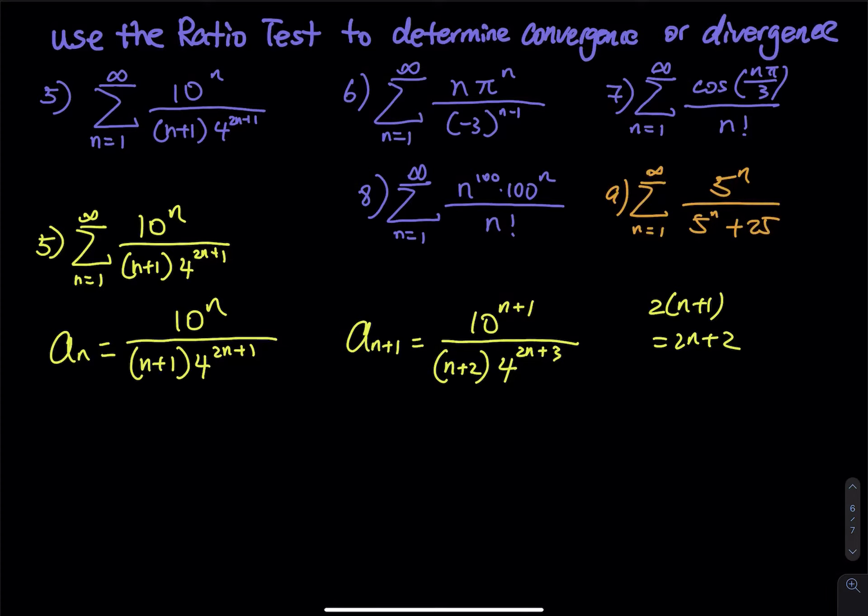More practice for the ratio test. The last problem, number nine, is the no-conclusion one — that one is hard to find from a book, so I just made one myself.